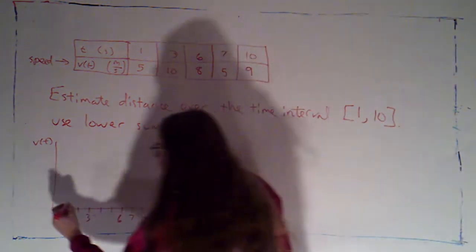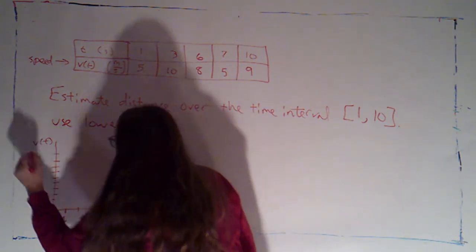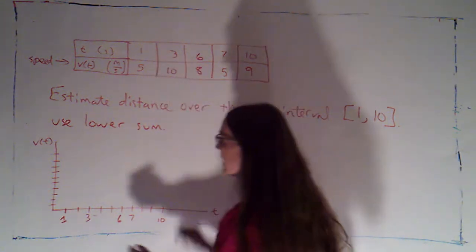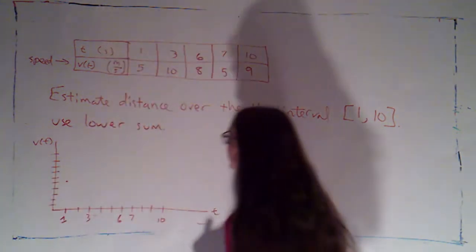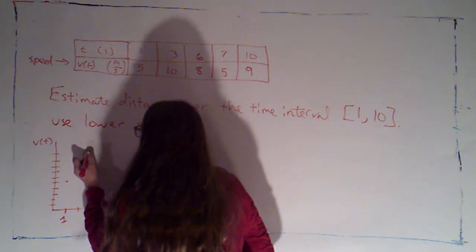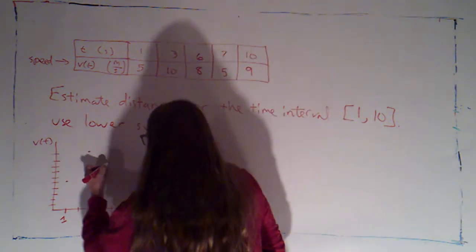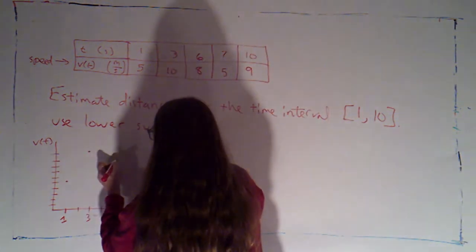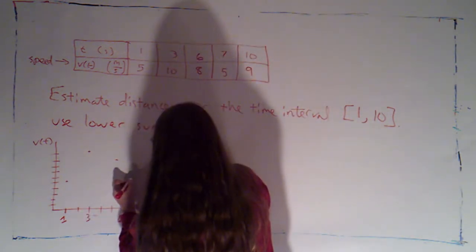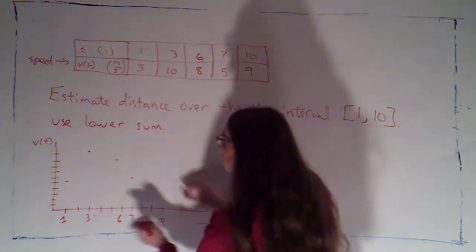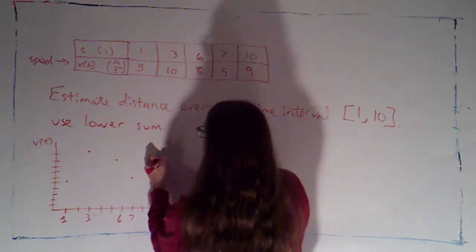Let me put some tick marks on my vertical axis. 1, 2, 3, 4, 5, 6, 7, 8, 9, 10. Okay. So at time 1, my speed was 5 meters per second. At time 3, we were up here at 10 meters per second. At time 6, we'd come back down to 8. At time 7, we're back down at 5. And at time 10, we're up at 9. Right about there.